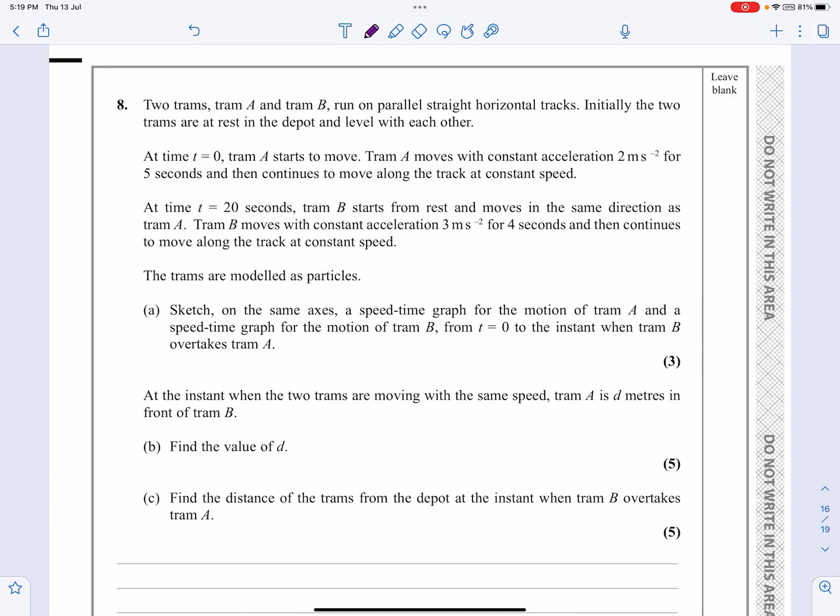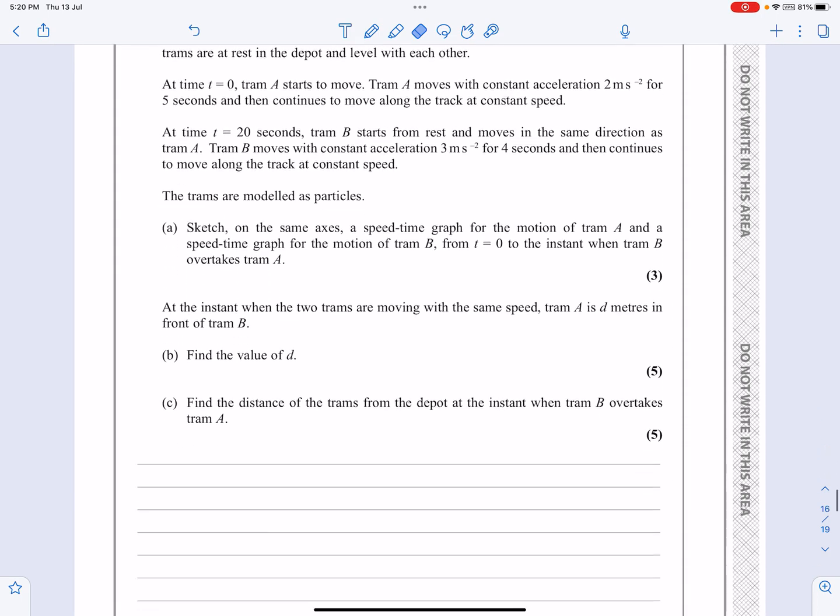Okay, this is the M1 paper for June 2021, question number eight. It's a kinematics question with speed-time graph as a big part of it. We're going to do some SUVAT work because we've got constant acceleration as well. You can see it's worth 13 marks here, so it's going to be quite an involved question. We'll take them step by step and we'll just look at this part here, which is asking us to sketch the speed-time graph. So I'll give you all the information for that and then we'll get going.